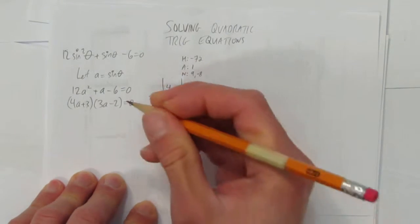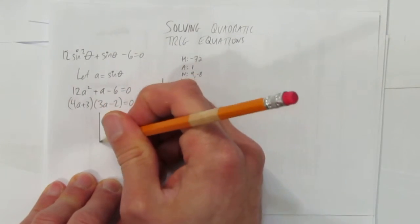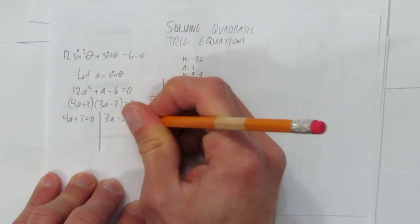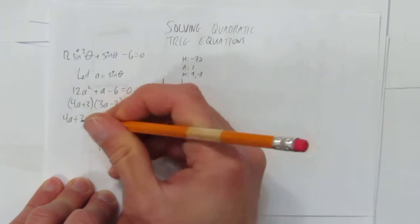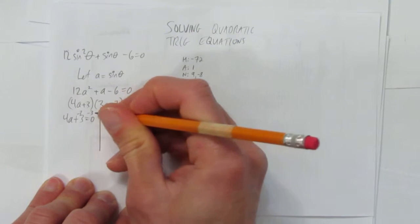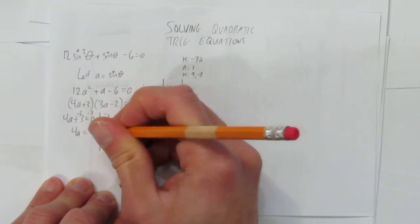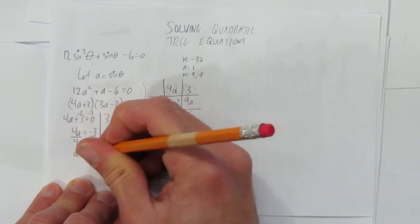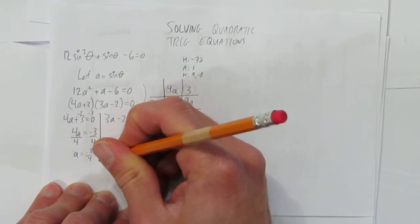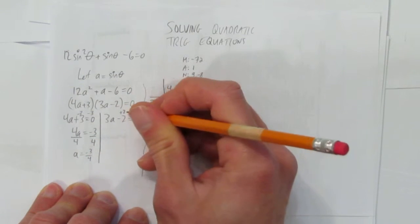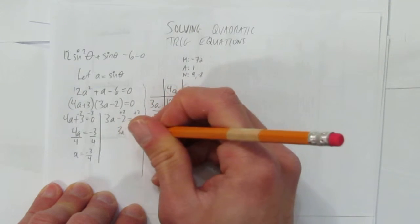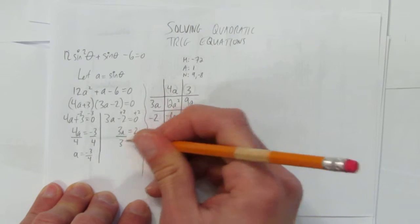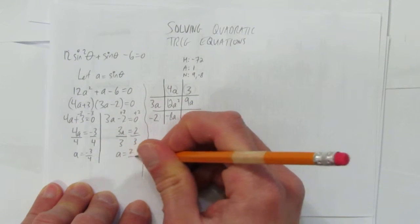So if you remember this skill, if you have 2 brackets equals 0, either or, the first bracket equals 0 or the second bracket equals 0. Put a little line here. And now take this plus 3 to the other side by subtracting 3 both sides. And you get 4a equals negative 3. And when you're times by 4, to get rid of it, you divide by 4. So a is negative 3 quarters. And on this one, let's change the minus 2 to the other side by adding 2 both sides. And you get 3a equals 2. 3 times a, we want to undo that. It's the opposite of times. Divide. So divide by 3. And we get a is 2 thirds.